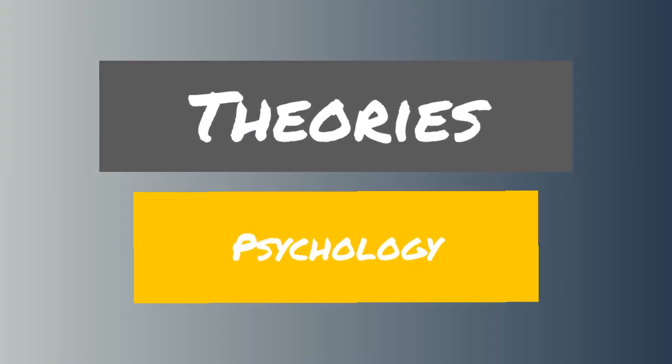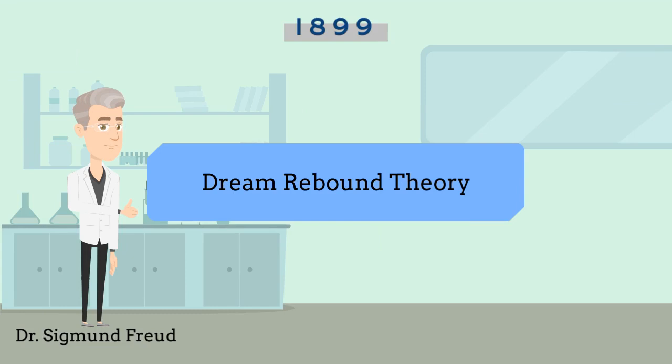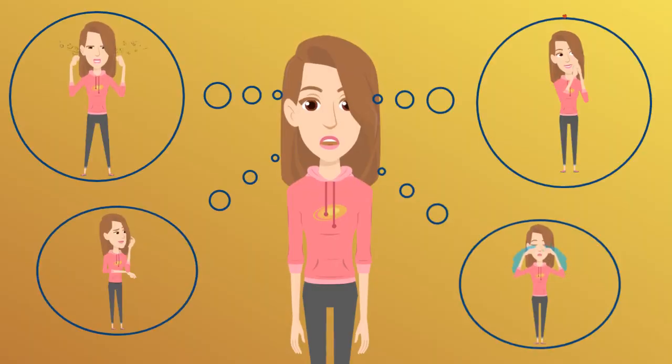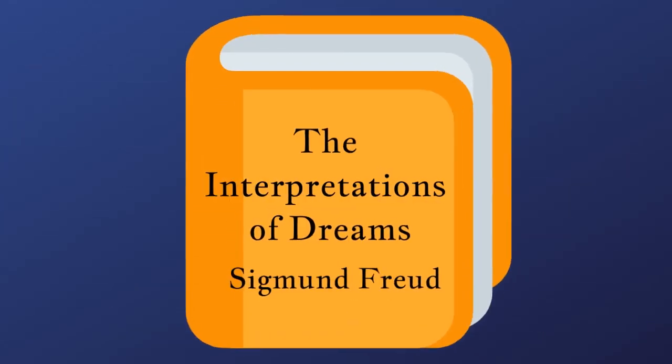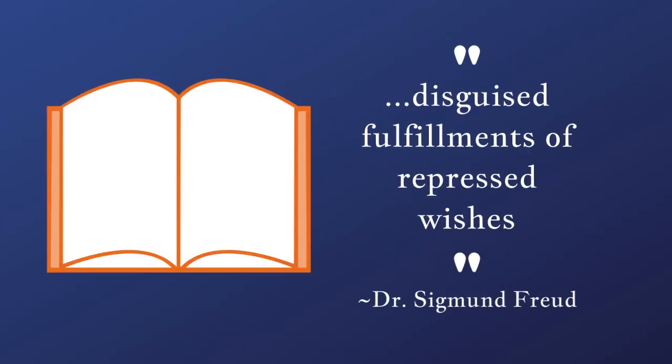The second category of theories are ones grounded more in the psychology of why we would dream. Scientist Dr. Sigmund Freud expressed ideas that align with the dream rebound theory. This theory states that dreams are the result of the human personality's repressed emotions and desires. In his book, The Interpretation of Dreams, he states that dreams are disguised fulfillments of repressed wishes. Although most of his ideas have been disproven, some experts still believe that suppressed desires can show up in dreams.